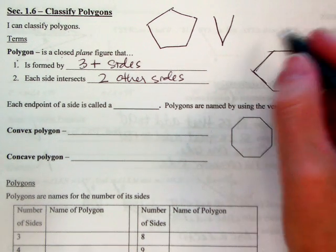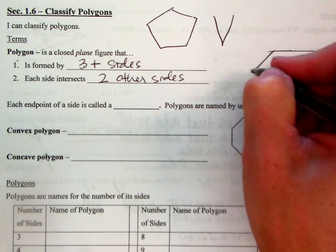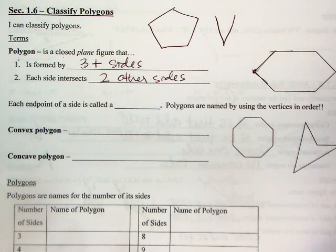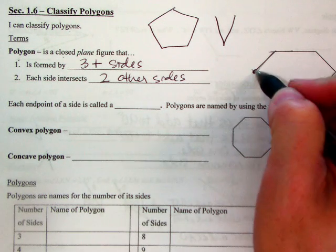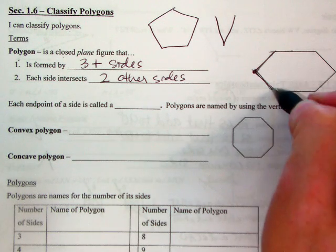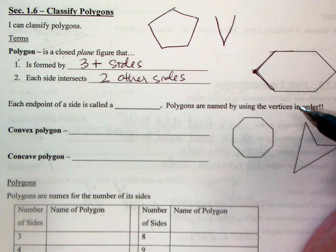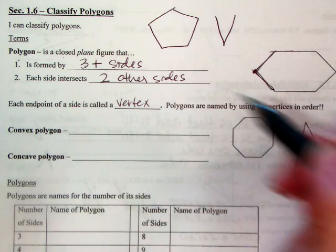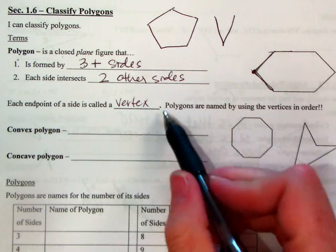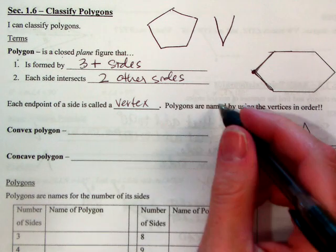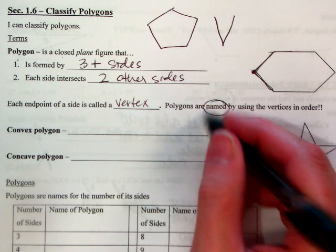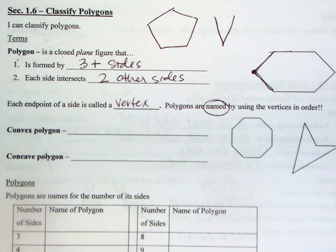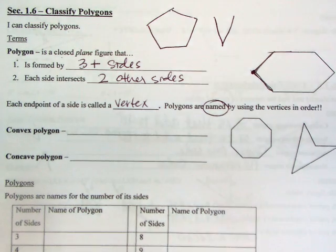The points where the sides meet are called vertices — we talked about those in terms of angles. Each endpoint is called a vertex. Polygons are named — like naming angles and naming segments — by using the vertices in order.